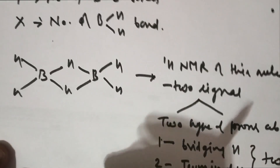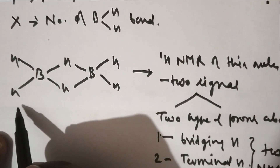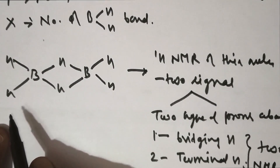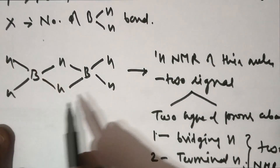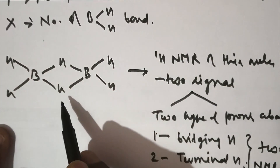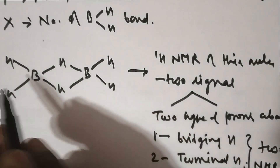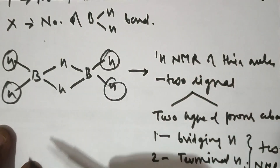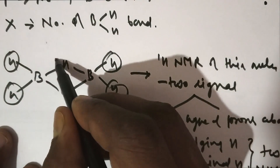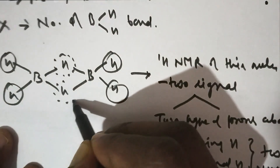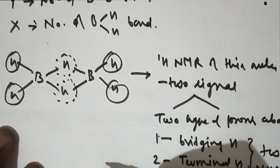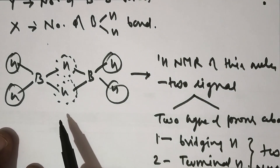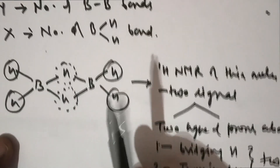This is also a very important question you can get in competitive examinations. When asked about the number of ¹H NMR signals in B2H6, the answer will be 2 — because there are two types of hydride present: bridging and terminal. These two hydrogen atoms have a different chemical environment, so they give two separate NMR signals.